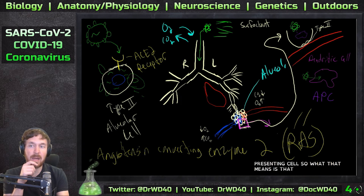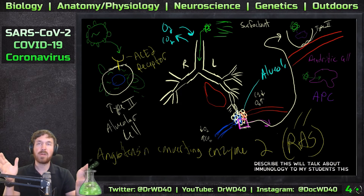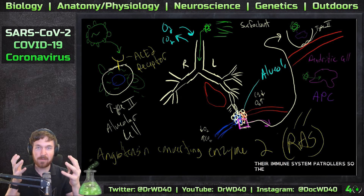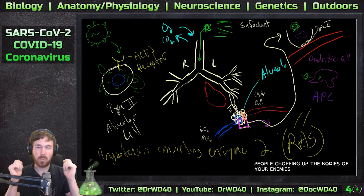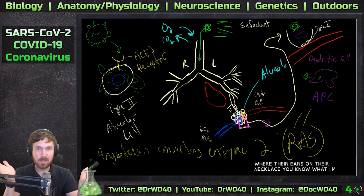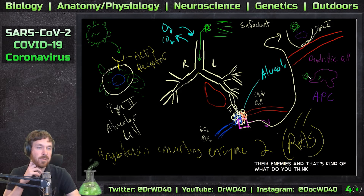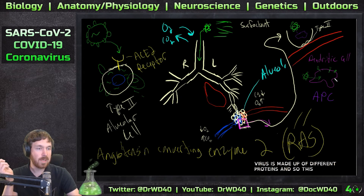What that means is it uptakes the sequences and proteins from the virus. This is like ancient tribal warfare - this is how I like to describe immunology. This dendritic cell eats the virus, they eat bacteria and other fragments as well - it's their job as immune system patrollers. They eat these fragments, chop them up - imagine tribal people chopping up their enemies and wearing the bones as necklaces - and that's kind of what these dendritic cells do. They eat the virus and present different fragments of it on their surface.